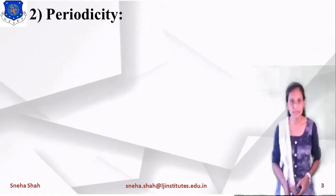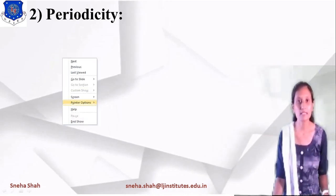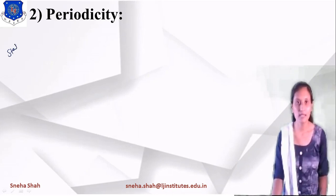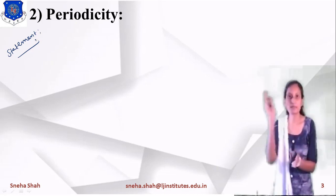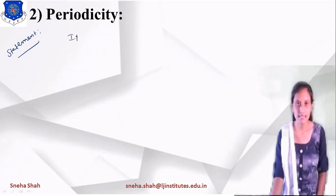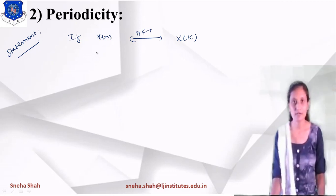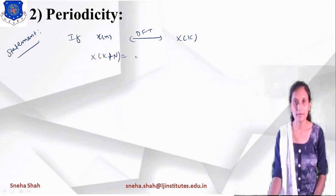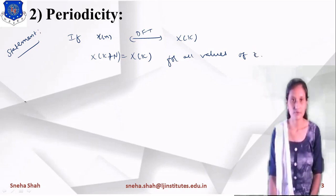The next property is the periodicity property. The statement is: if x(n) is convertible to X(k) via DFT, then the periodicity condition states that X(k+N) = X(k). That is, after N number of samples it will be the same as the original sequence.